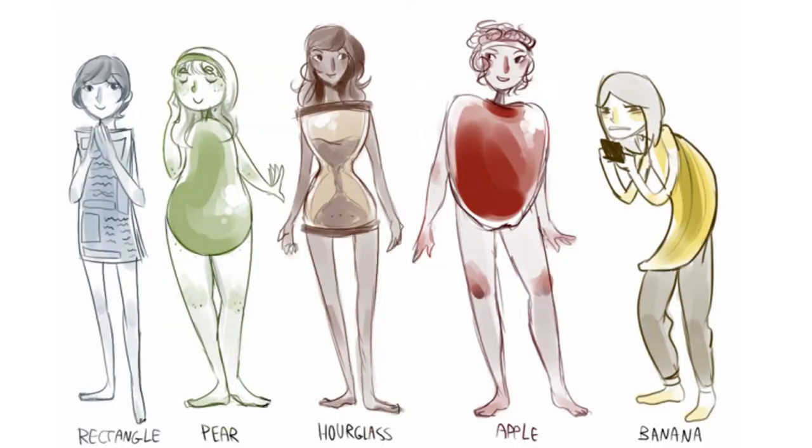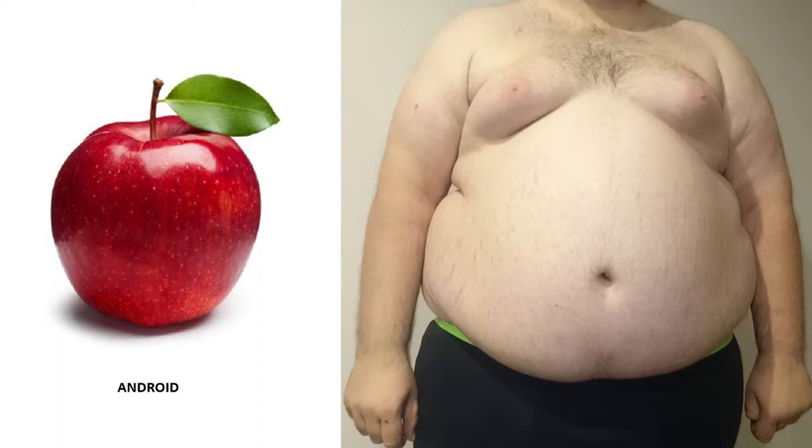So we just described the body shapes with so many — what to call fruits — like apple, banana, or pear, rectangle. So this is our traditional apple-shaped body with a big fat belly, like me.